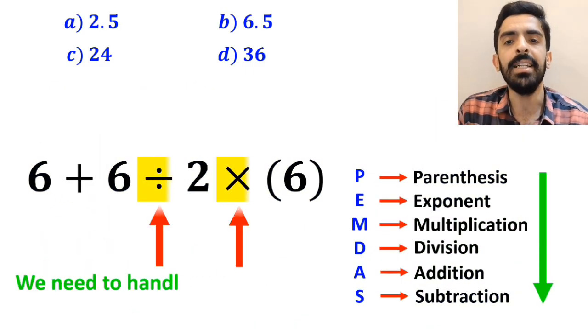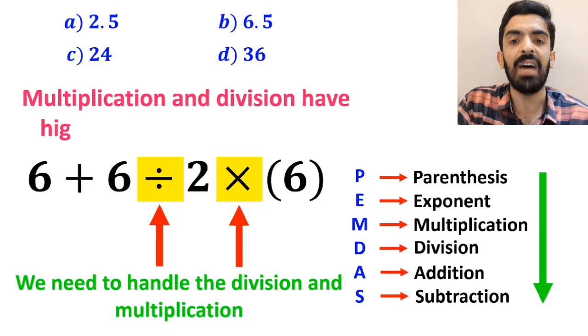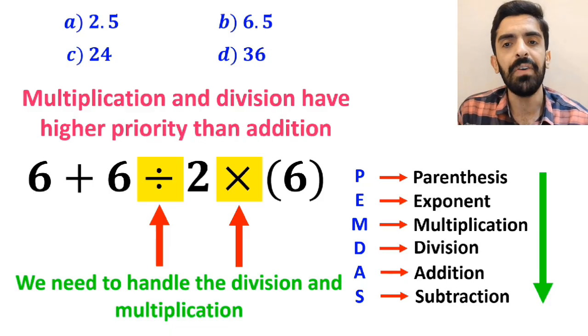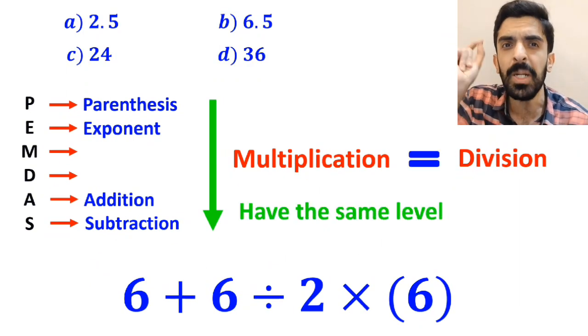And the next step, we need to handle the division and multiplication, because multiplication and division have a higher priority than addition. However, it's very important to note that, in the PEMDAS rule, multiplication and division have the same level of priority.